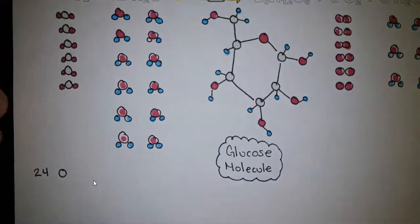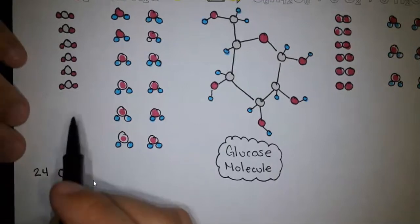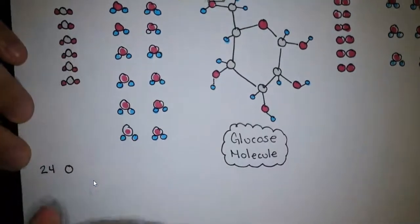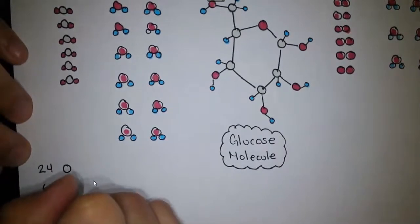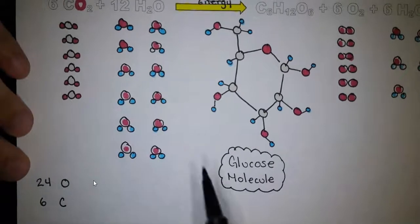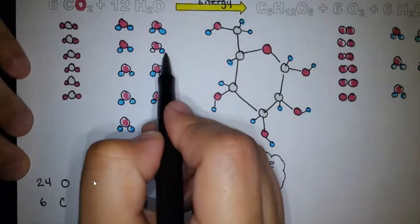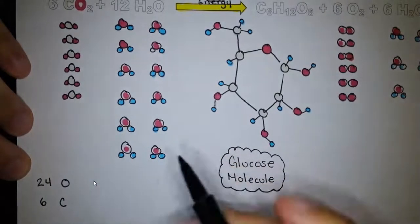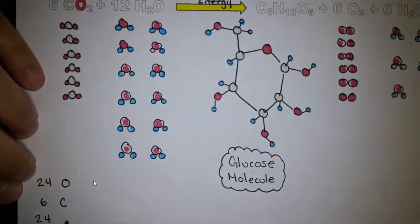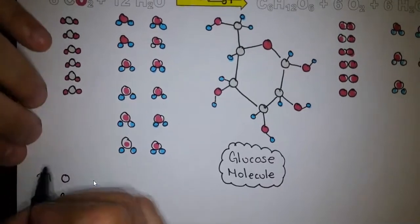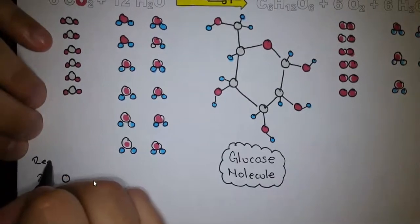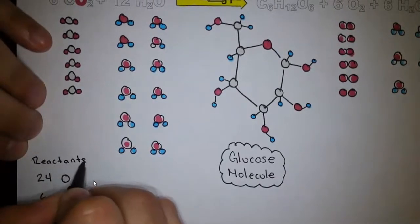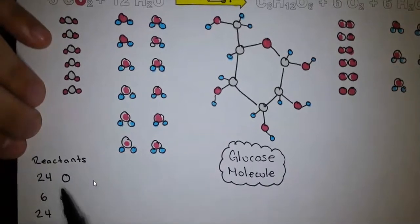That's the total on my reactants side: 24 oxygens, 6 carbons, and 24 hydrogens. So when I go to my products, I should have 24 oxygens, 6 carbons, and 24 hydrogens. Let's see if we did the math correctly. On the products side: counting oxygens — 24 oxygens. Counting carbons — 6 carbons. And counting hydrogens — 24 hydrogens.